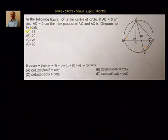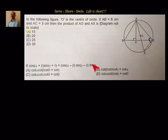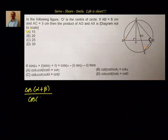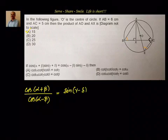Now let's look at Problem 24. Given: cos(α+β) sin(γ+λ) = cos(α−β) sin(γ−λ). We need to find which condition is correct. Rearranging: cos(α+β) ÷ cos(α−β) = sin(γ−λ) ÷ sin(γ+λ). Now we can apply componendo and dividendo to simplify.